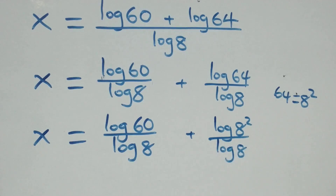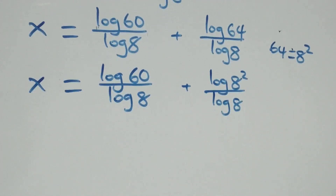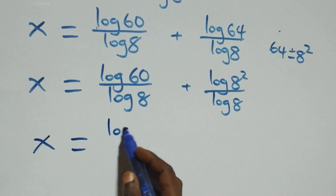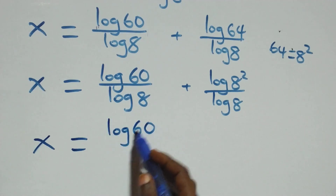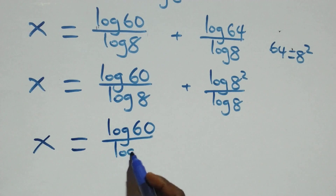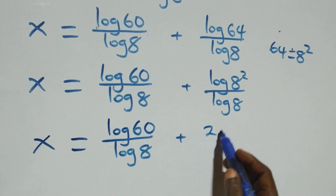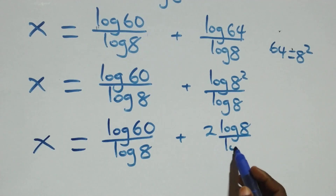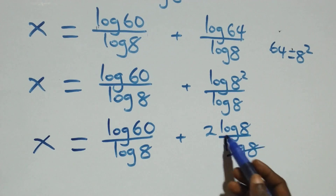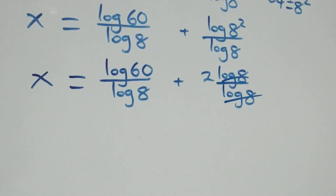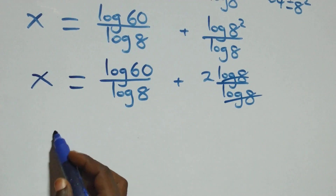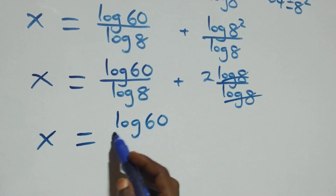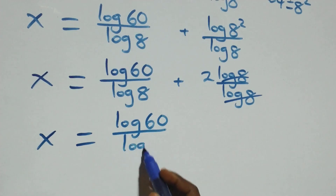Applying the power log rule, the exponent two comes out: x equals log sixty over log eight plus two log eight over log eight. The log eight terms cancel, leaving two. So x equals log sixty over log eight plus two.